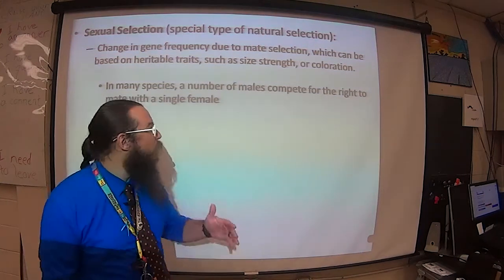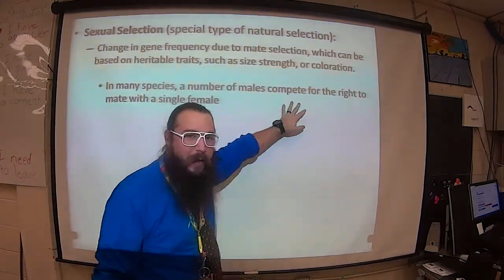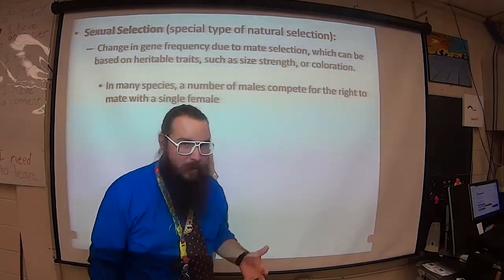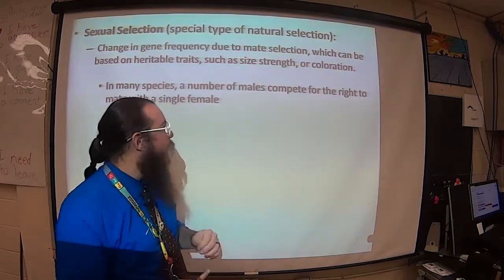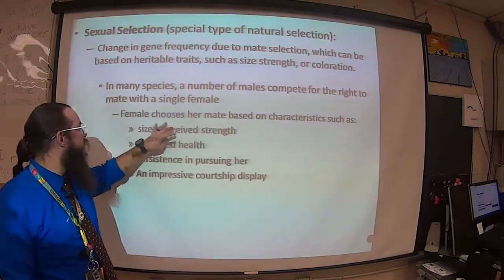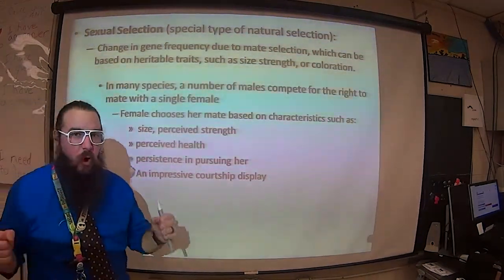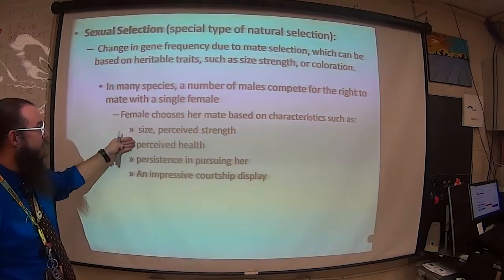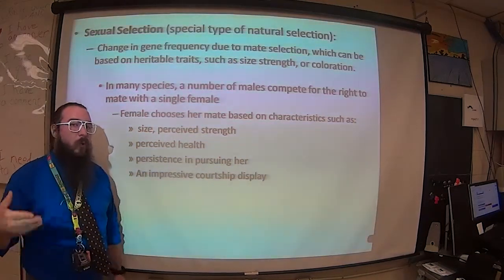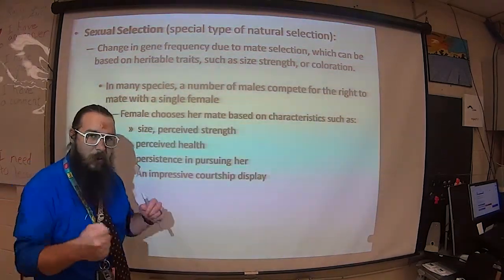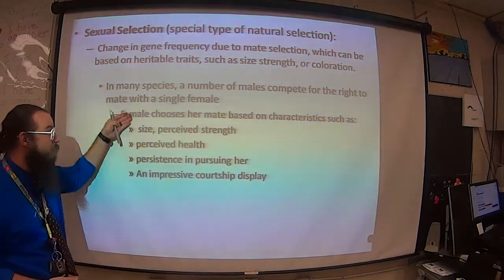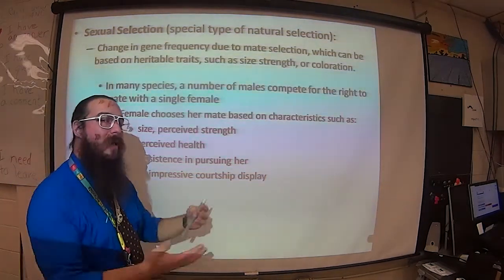When you see sexual selection in nature, it's usually the males competing for the females. Usually males have some big, bright, exorbitant trait that helps attract females as mates, while females are smaller and more plain. Females choose their mate based on characteristics: maybe it's big, maybe it seems strong, maybe it's really fast, maybe it seems like a healthier individual, maybe it's more persistent. It makes sense that persistence and fitness would be rewarded in nature — you can see why these would be desirable traits for a female to want to pass to her offspring.